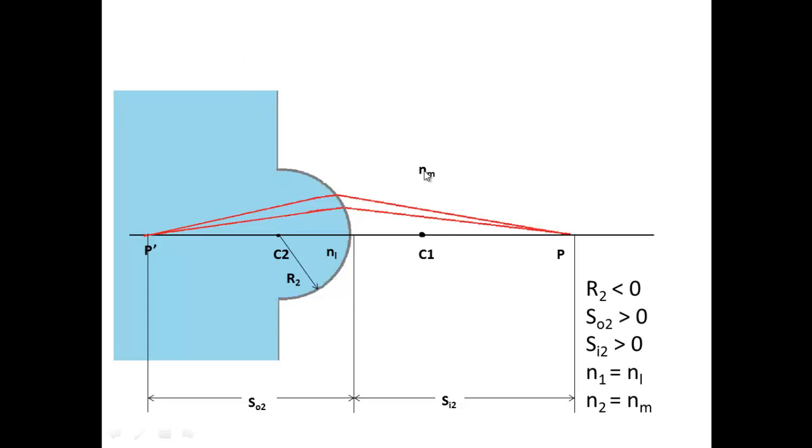So we're going towards an interface where the circle, well the center of the circle goes to the left, so radius is less than zero. Object distance is greater than zero. Image distance is off to the right, so it's also greater than zero. And in this case, the N1 is going to be the lens because that's where we're coming from, and N2 is the medium because that's where we're going to.